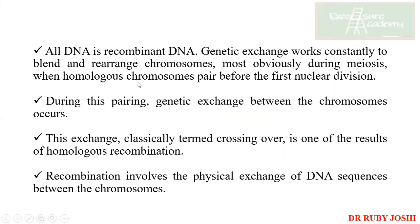So, as we do know, the images can be different because genetic change is always happening. It is happening at the meiosis level, or it is happening possibly. So as the meiosis is happening, it is changing between the homologous chromosomes, and sometimes the genetic exchange is happening because of transmissibility, which is happening because of the virus. So there are many ways by which the genetic exchange is happening.